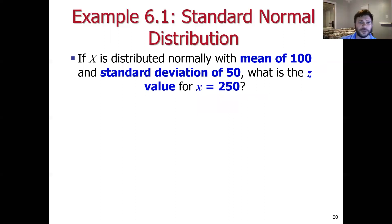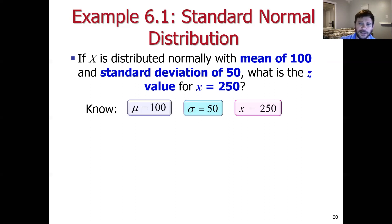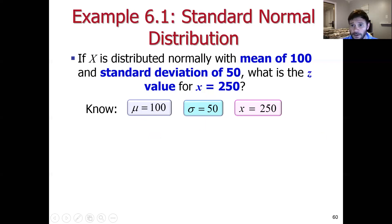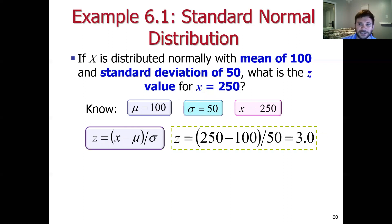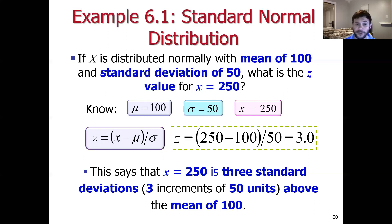If X is distributed normally with a mean of 100 and a standard deviation of 50, what is the Z value associated with X equal to 250? We know the mean is 100, sigma is 50, and X is 250. Notice that 250 is exactly 150 above the mean, and 150 is exactly three standard deviations above the mean. Plugging into the Z-transform: (250 − 100) / 50 = 3. So X equal to 250 is exactly three standard deviations above the mean of 100.